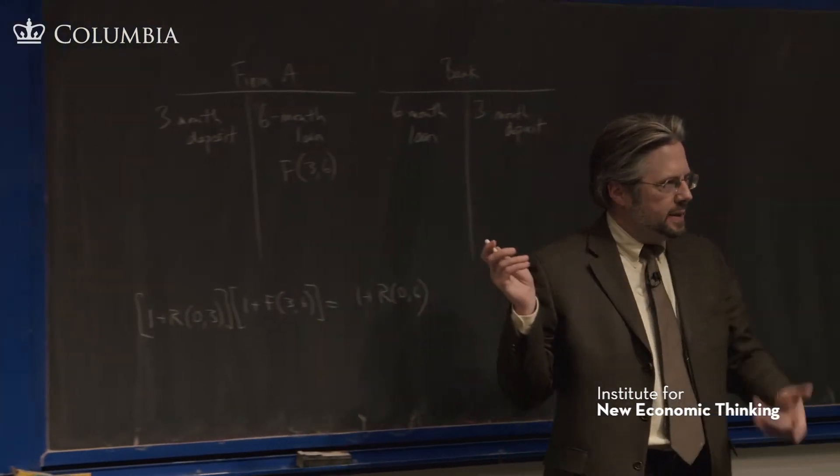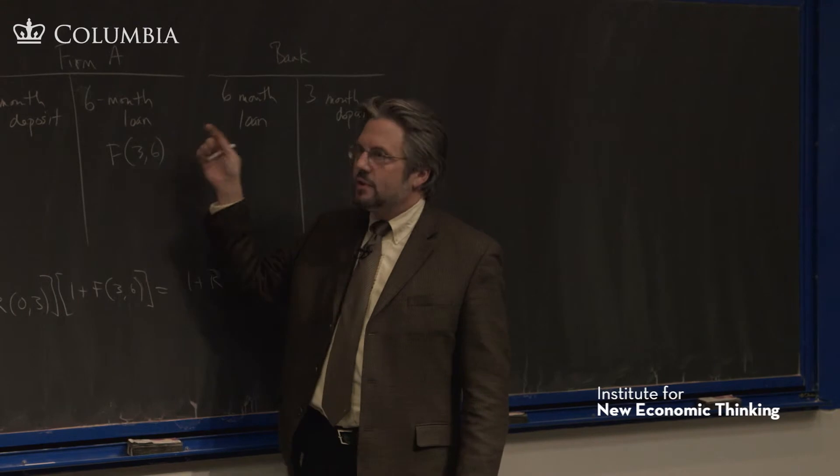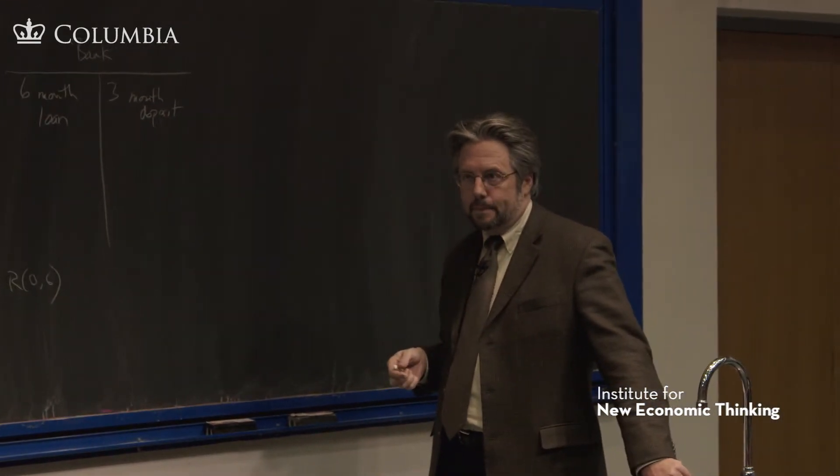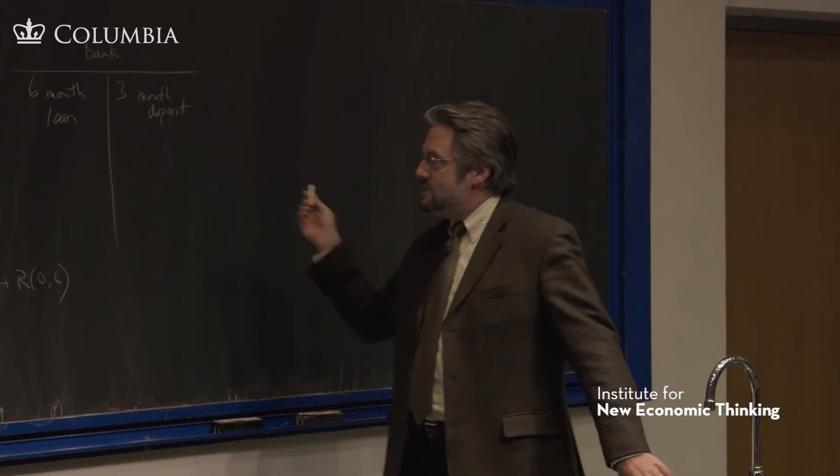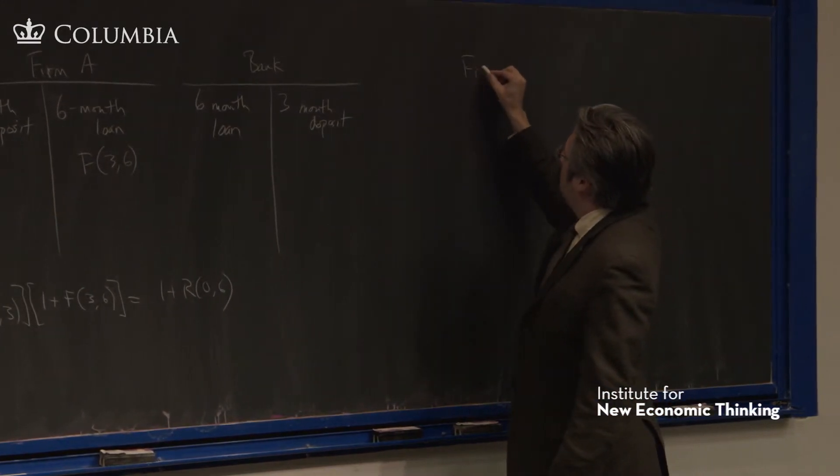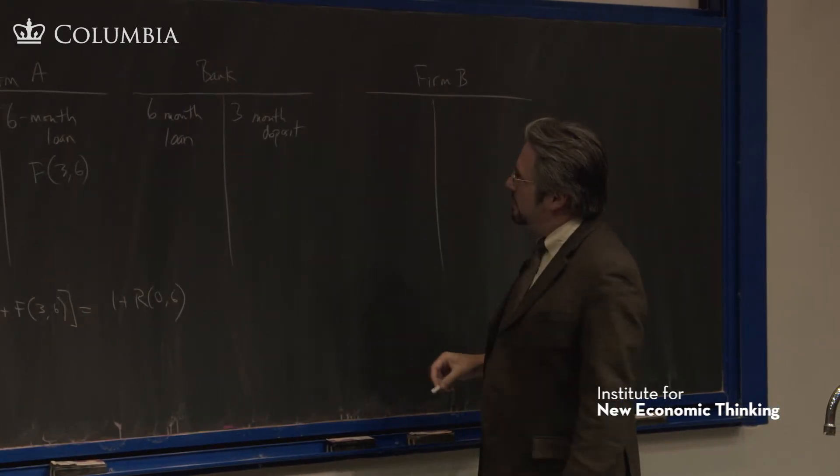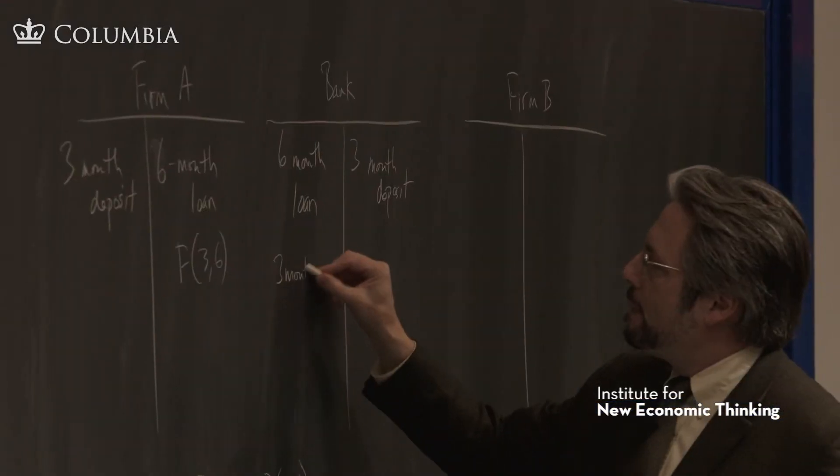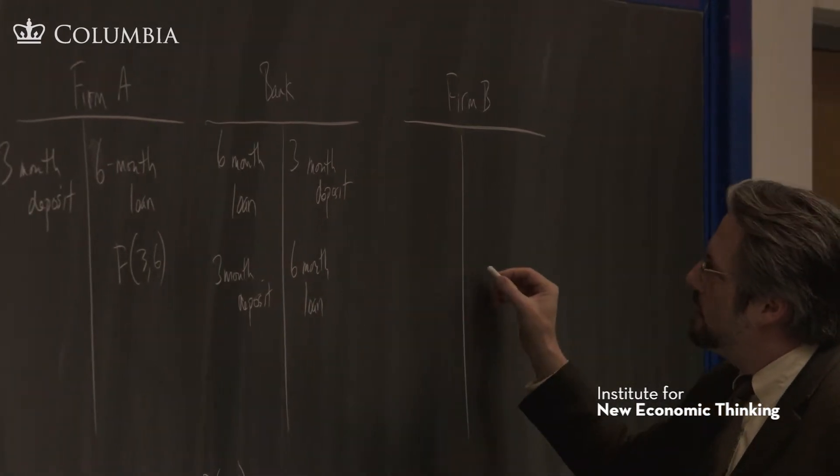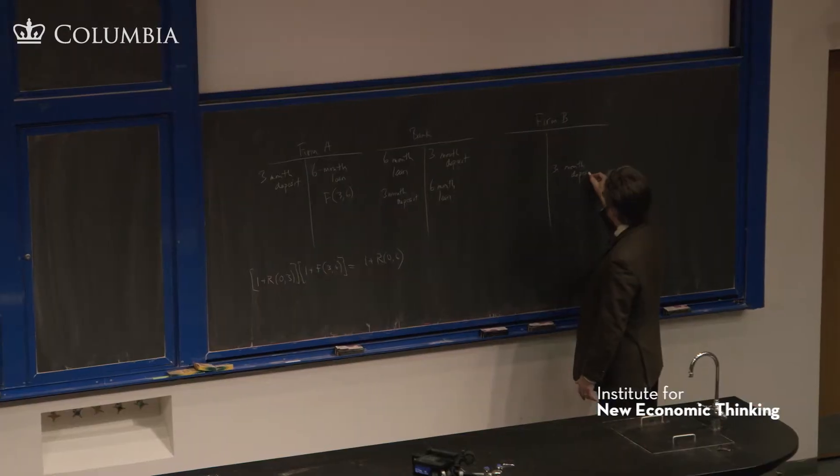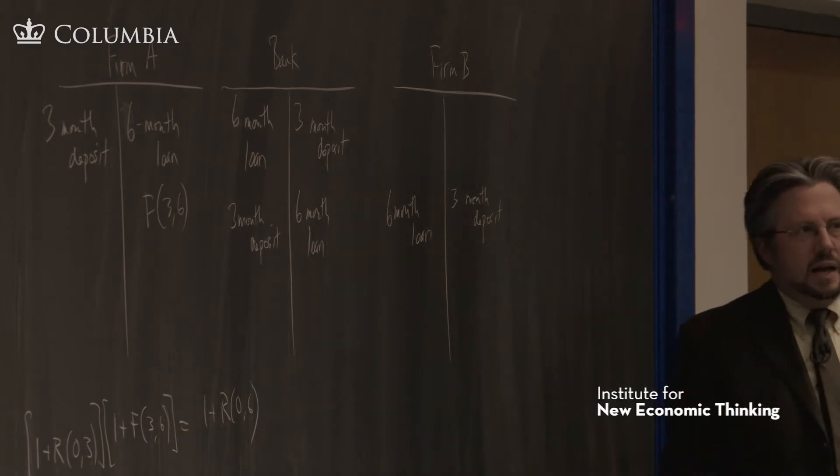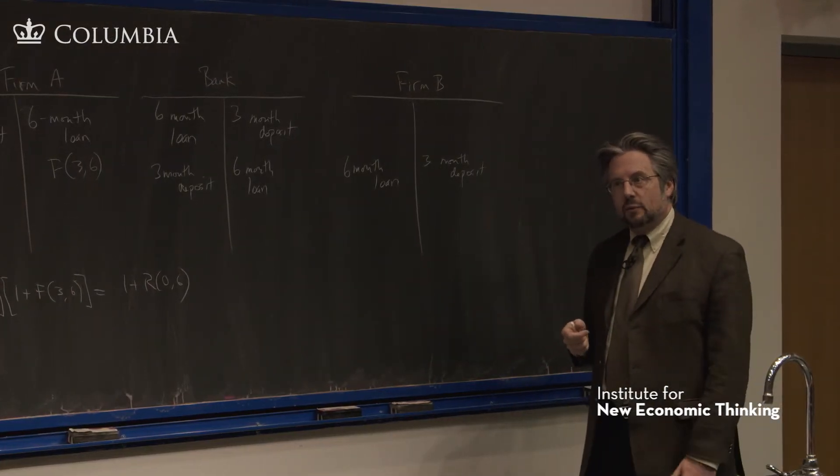Now, when the bank makes this agreement, the bank is agreeing to lend to this firm at this rate three months from now. So the bank now has a problem, which is where am I going to get the money? And it could possibly hedge this by finding somebody else who wants exactly the opposite. So it might be another bank or it might be another firm. If there's a firm B that wants just the opposite, so we have a three-month deposit here and a six-month loan here. So firm B is looking to lock in an interest rate for a deposit that they're going to make three months from now.